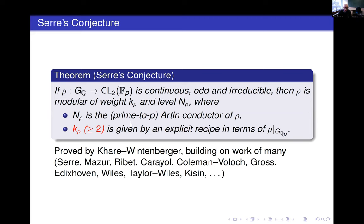This is a theorem due to Khare–Wintenberger, building on work of many other people—notably Serre, Mazur, Ribet, Khare, Kisin, and also Gross. Serre, Mazur, and Ribet—especially Mazur and Ribet—proved important results towards the conjecture. Khare proved important results towards nailing down the correct level. Kisin, Coleman–Voloch, and Gross proved companion forms results that feed into the proof of the weight part. And finally, to prove modularity, building on Wiles's method and the Taylor–Wiles method and using results on the refined version of Serre's conjecture, Khare–Wintenberger by an ingenious inductive argument proved the modularity part, yielding the full conjecture.